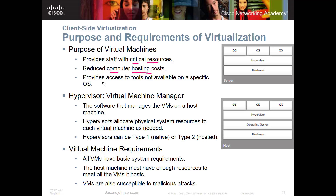Virtualization reduces computing and hosting costs and provides access to tools not available on a specific operating system. For example, on a server we can put multiple operating systems using a hypervisor on top of the hardware. This allows us to run multiple operating systems without needing separate physical servers — one server with lots of RAM and storage can host, say, a Windows instance, a web server, a print server, or a Linux server.